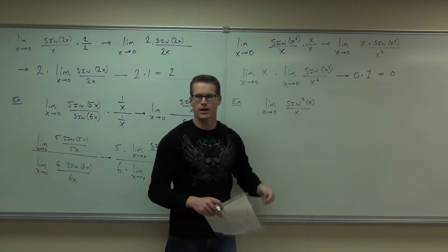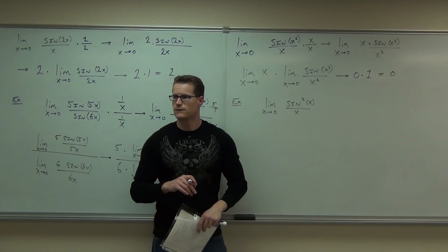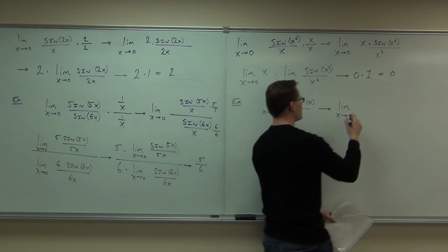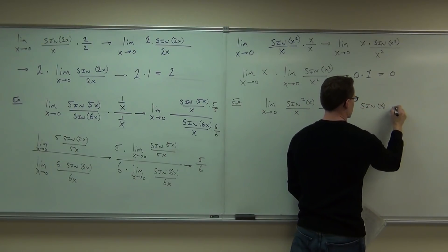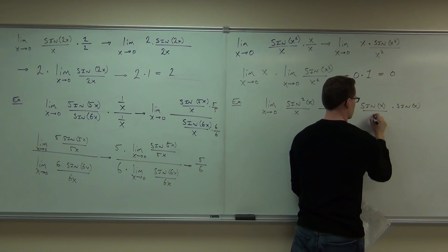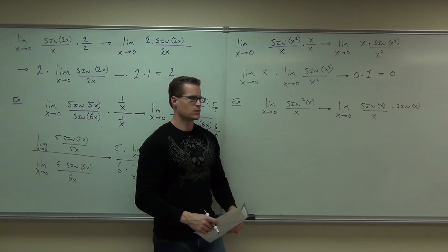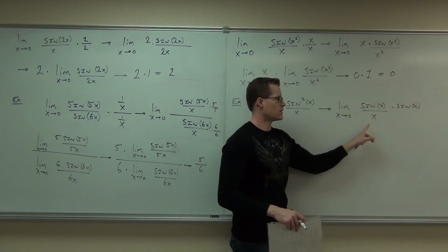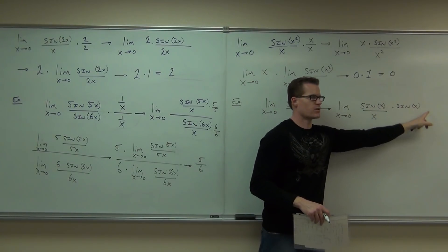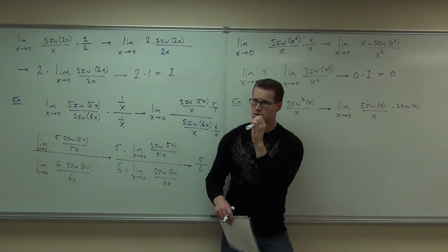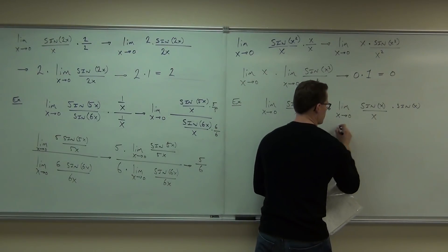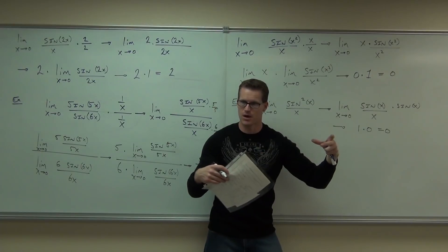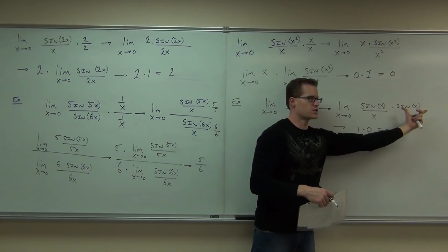Sine of x squared is the same thing as sine squared x. What's sine squared x mean? Sine x, squared. You're always trying to break it into limits you know, limits you understand. What's the limit of sine x over x? One — this is going to give you 1. What's the limit of sine x as x approaches 0? It's 0 because when you plug in 0, you get 0. So this is ultimately going to be 1 times 0, or 0. The limit of sine x over x is 1, the limit of sine x is 0, and 1 times 0 is 0.